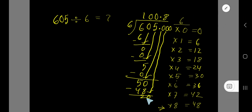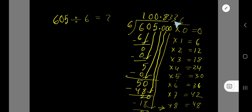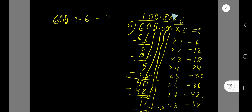6 goes into 20 how many times? 3 times gives 18, and 4 times gives 24, so it's 3 times. 3 times 6 is 18, subtract and we get 2. Bring down the next zero — again we have 20. 6 goes into 20 again 3 times. 3 times 6 is 18, subtract and we get 2. Since the 3 is repeating, we place a bar over the 3.